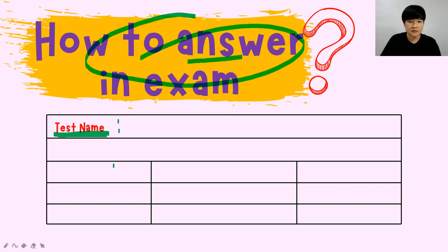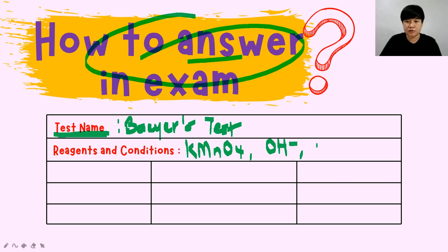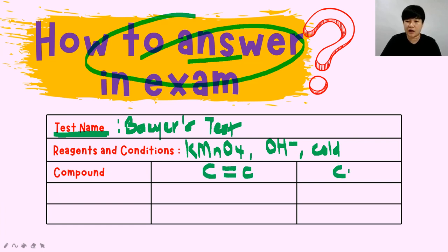For example, choosing the Bayer test: write 'Bayer test' as the test name. The reagent and condition is KMnO₄, OH⁻, cold. For the compound column, you have carbon-carbon double bond and carbon-carbon single bond, because the function of Bayer test is to differentiate these two.